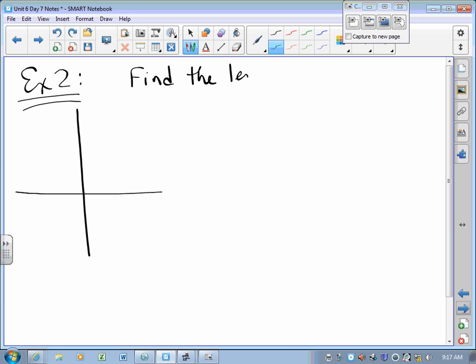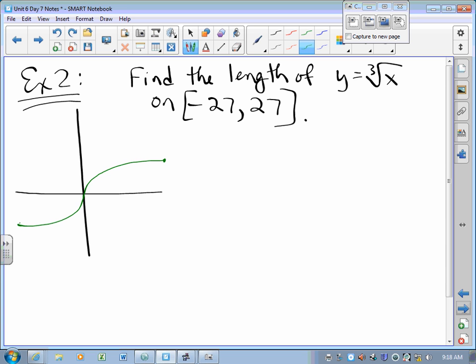Find the length of y equals cube root of x on negative 27 to 27. Here we go. Figure not drawn to scale, except that it probably is. What could go wrong? Arc length is the integral from negative 27 to 27 of the square root of 1 plus, oh. What is that derivative? That's 1/3 x to the negative 2/3.